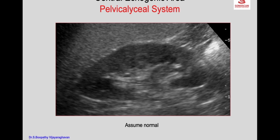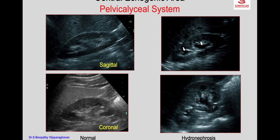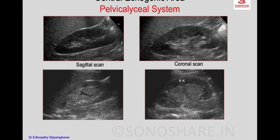Regarding the central echogenic area: the most important structure is the pelvicalyceal system, which normally remains collapsed and cannot be visualized. When dilated, the central echogenic area is splayed by the dilated collecting system, and on coronal scan you see the calyces communicating with the medial pelvis. The central echogenic area may also be enlarged due to sinus lipomatosis. Abnormally, if there is fluid between structures, it may indicate multiple polypoid masses; on coronal scan a mass extending into the ureter can represent a blood clot, sloughed papilla, fungus ball, or papillary TCC.